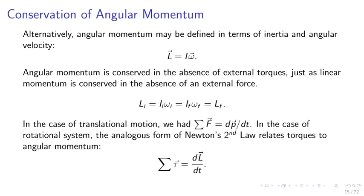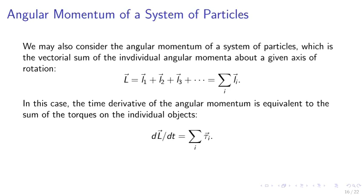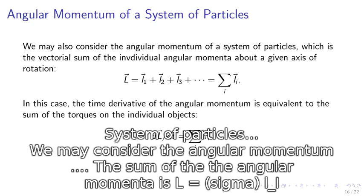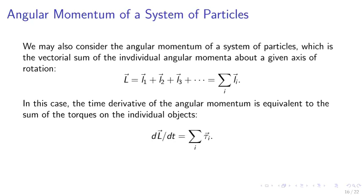Conservation of angular momentum. Angular momentum may also be defined in terms of inertia and angular velocity: L equals I omega. Angular momentum is conserved in the absence of external torques, just as linear momentum is conserved in the absence of an external force. In the translational case, sigma F equals dp over dt. In the rotational case, the analogous form of Newton's second law relates torques to angular momentum. For a system of particles, the total angular momentum L equals L1 plus L2 plus L3 equals sigma L_i, and dL over dt equals sigma torque.